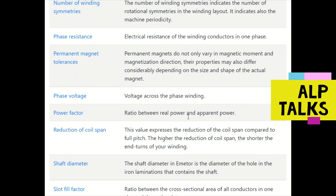Permanent magnet tolerance: permanent magnets not only vary in magnetic moment and magnetization direction, but their properties may also differ considerably depending upon the size and shape of the actual magnet — these variations are the tolerances. Phase voltage is the voltage across the phase winding.